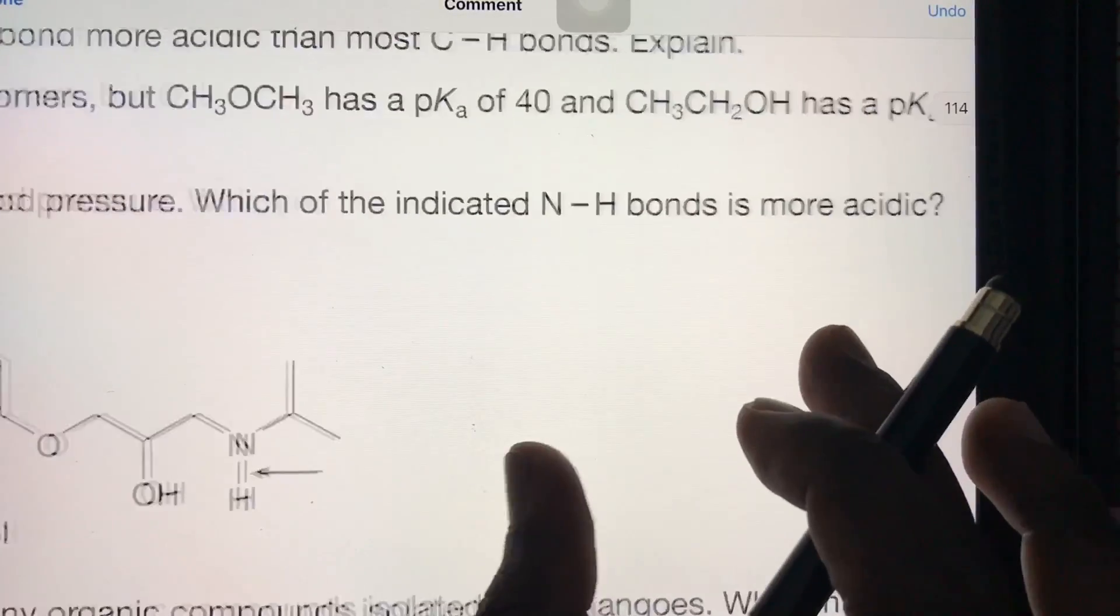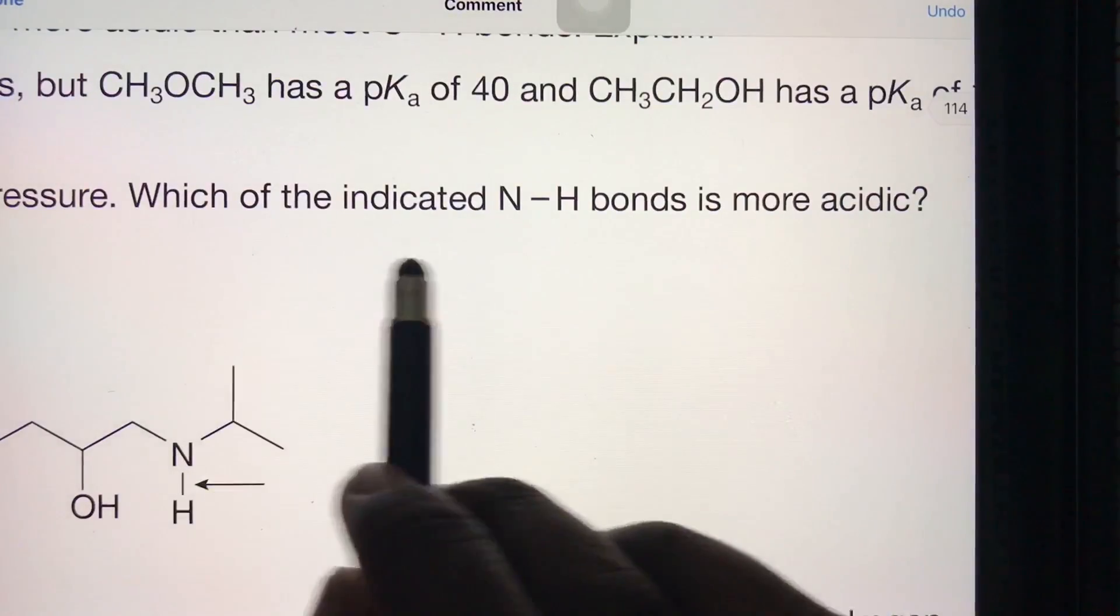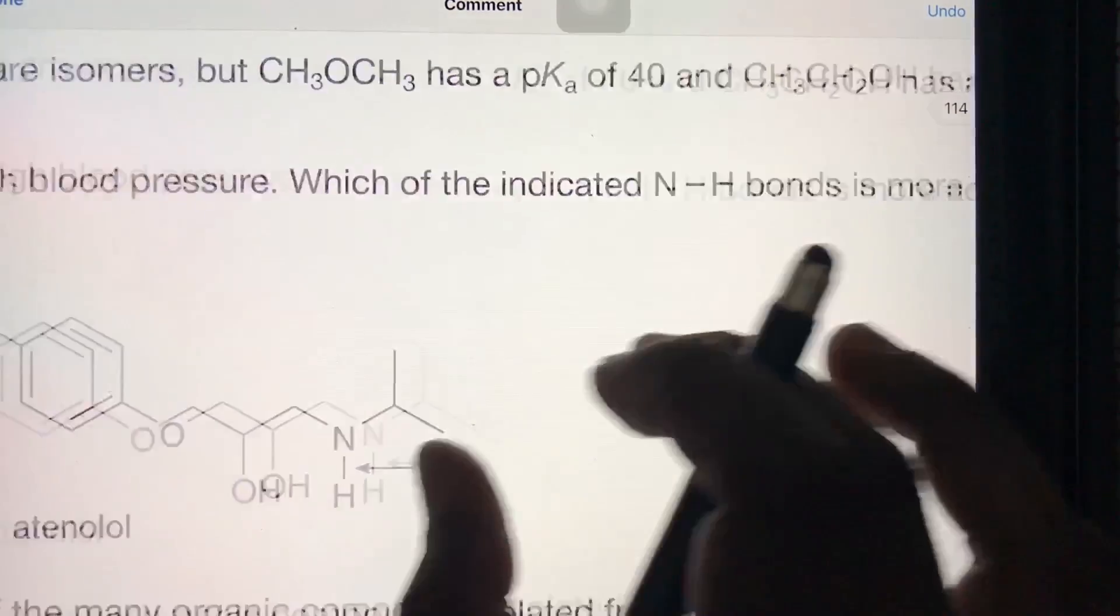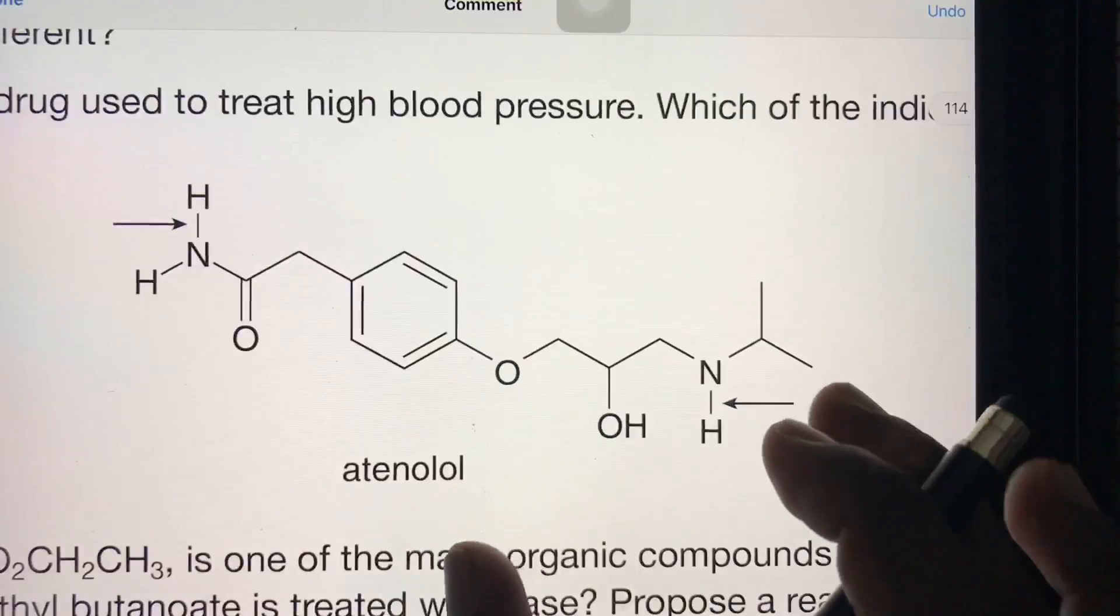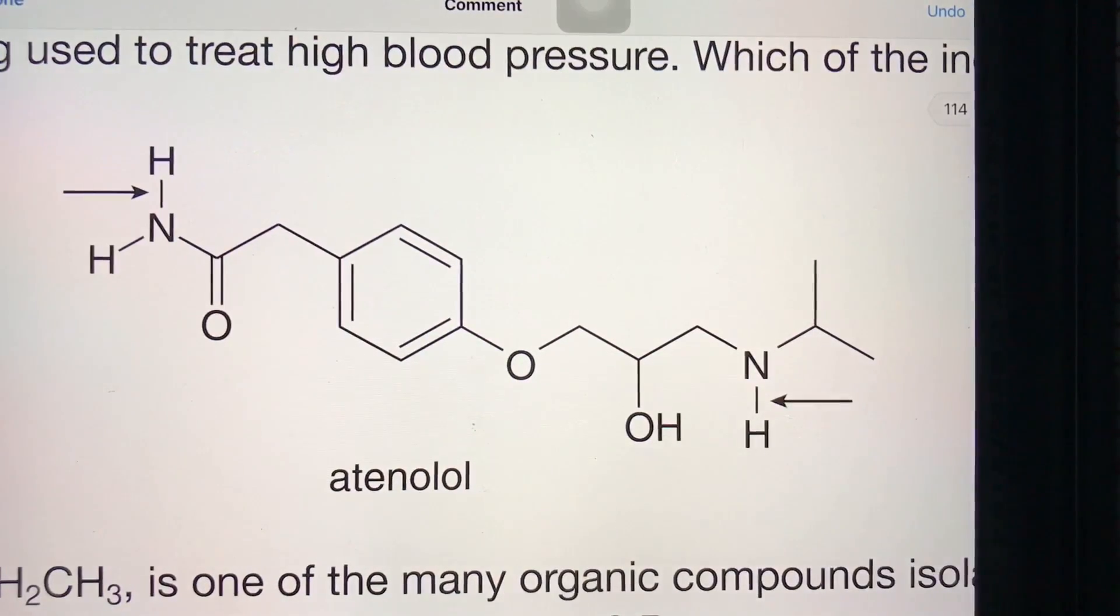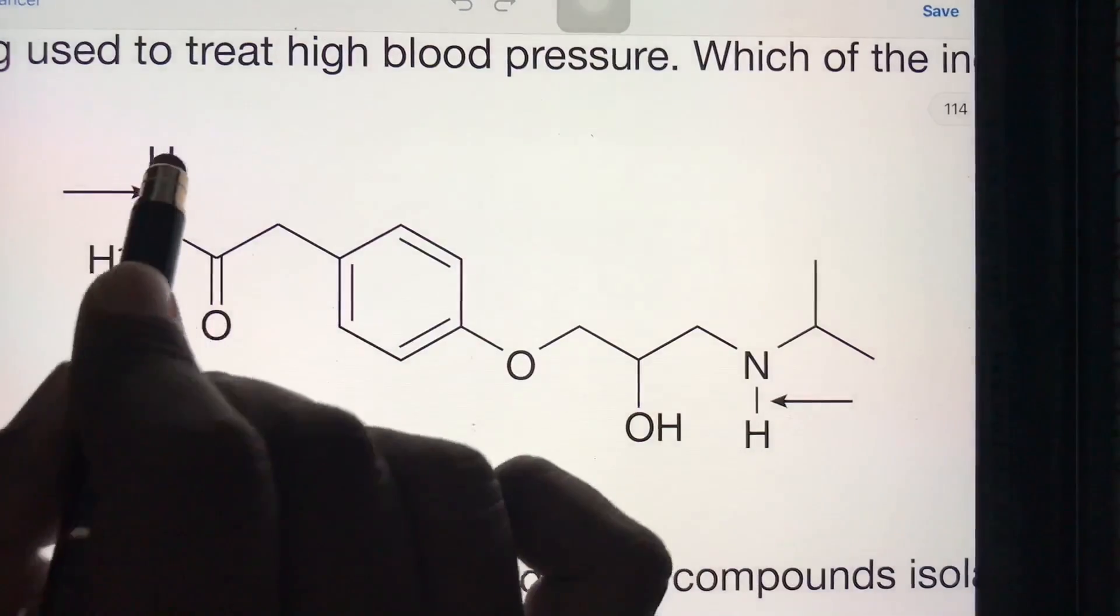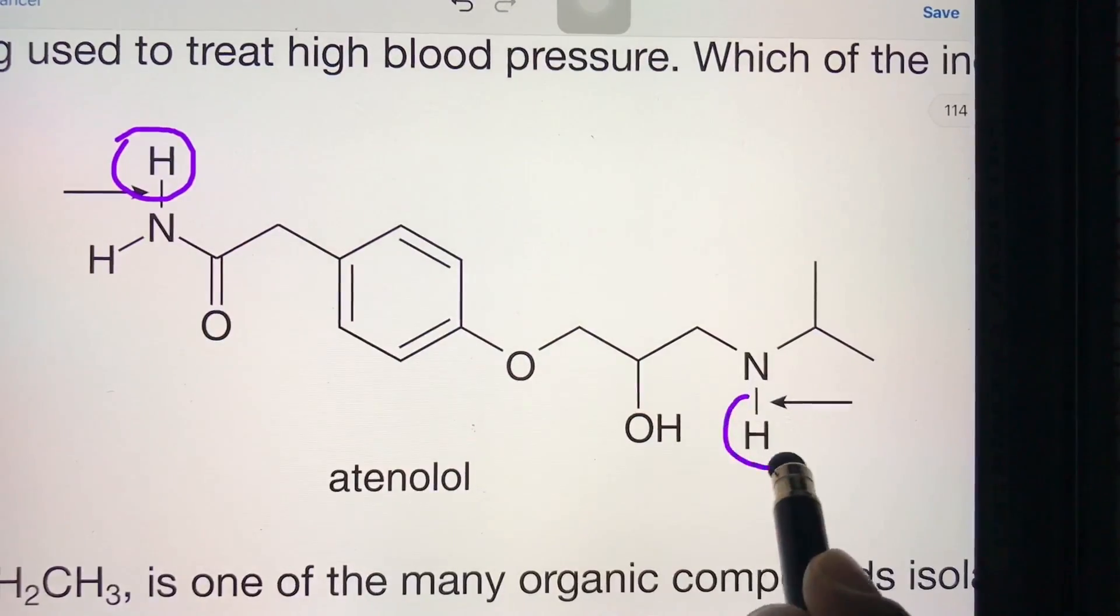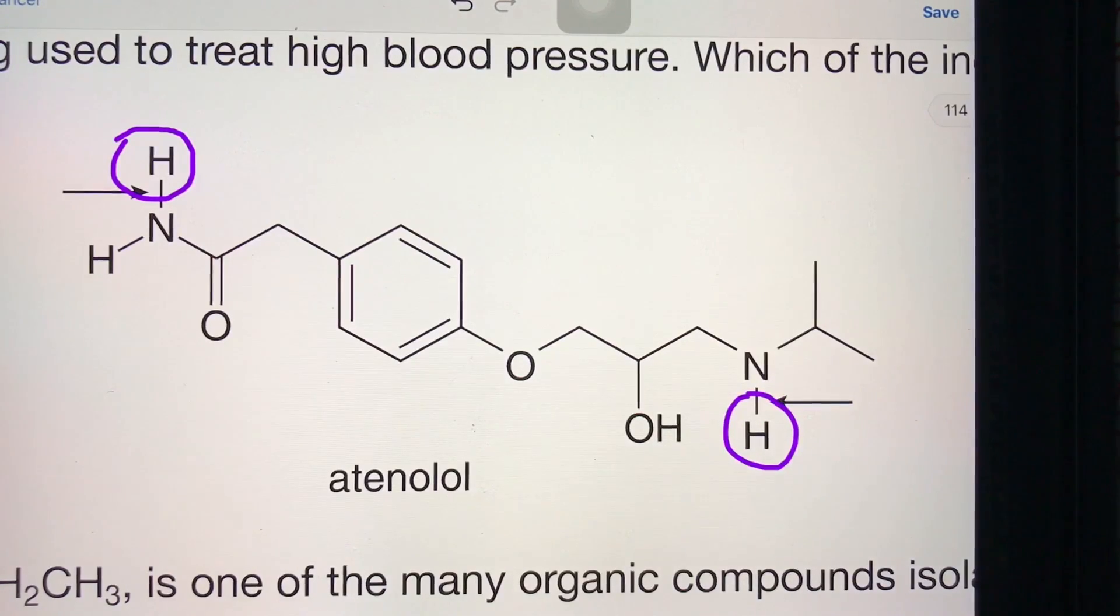In this problem, we're asked to find which of the indicated N-H bonds is more acidic. Here is the molecule of atenolol with two N-H bonds present. This is the first and this is the second hydrogen, and we have to find which hydrogen is most acidic.